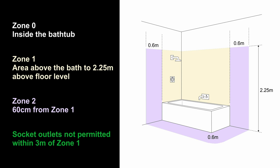So in terms of the actual zones it's really very straightforward: zone 0 is in the bath, zone 1 is above the bath up to 2.25 metres, and zone 2 is 60 centimetres from the edge of the bath. Anything else is not within the zones and does not apply. The only other thing to note is that socket outlets can't be installed within three metres of the edge of the bath — so in most bathrooms that's not going to be allowed.